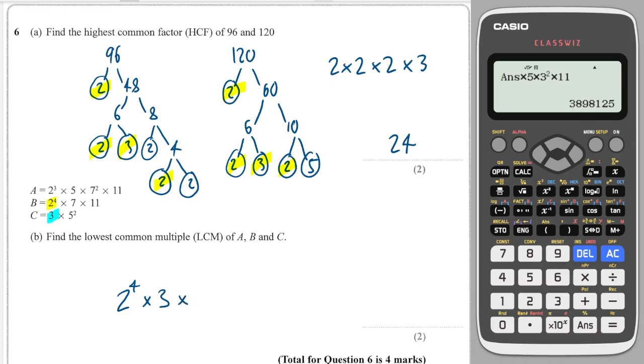We just have 1 3 in there, so that has to be in the lowest common multiple. And if we look at the 5s next, we have 5 to the 2 is the highest power. And if we look next at the 7s, we have 7 to the 2 is the highest power. And then finally we have just 11 is the highest power, so that has to be in as well.